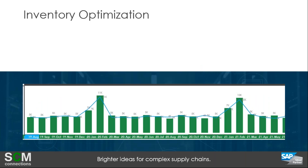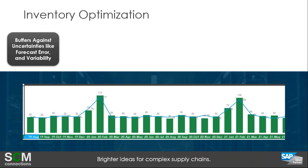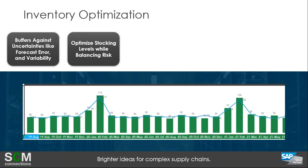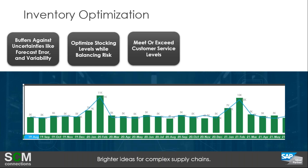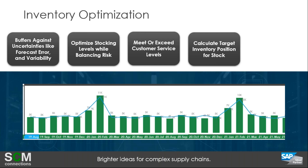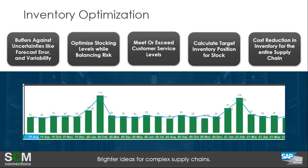So what is inventory optimization? It uses multi-stage inventory targets to buffer against uncertainties like forecast error and supply and service variability. It optimizes stocking levels while balancing risk and costs effectively. It aims to meet or exceed customer service levels — making sure all your customers receive their products on time — and provides your target inventory position for stocking levels, showing what your target inventory is made up of and the level it should be at.